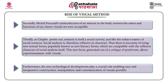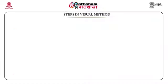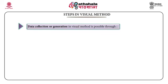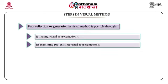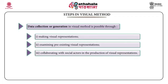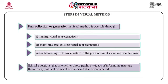What are the steps in visual method? The first step is data collection or generation, which is possible through: one, making visual representations; two, examining pre-existing visual representations; and three, collaborating with social actors in the production of visual representations. Ethical questions — that is, whether photographs or videos of informants may put them in any political or moral crisis — should also be considered.